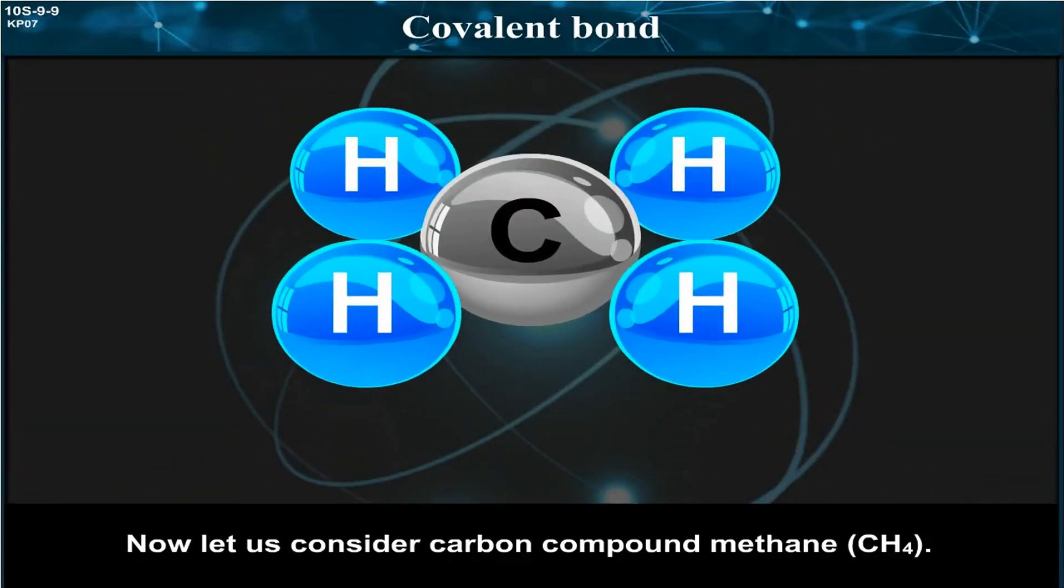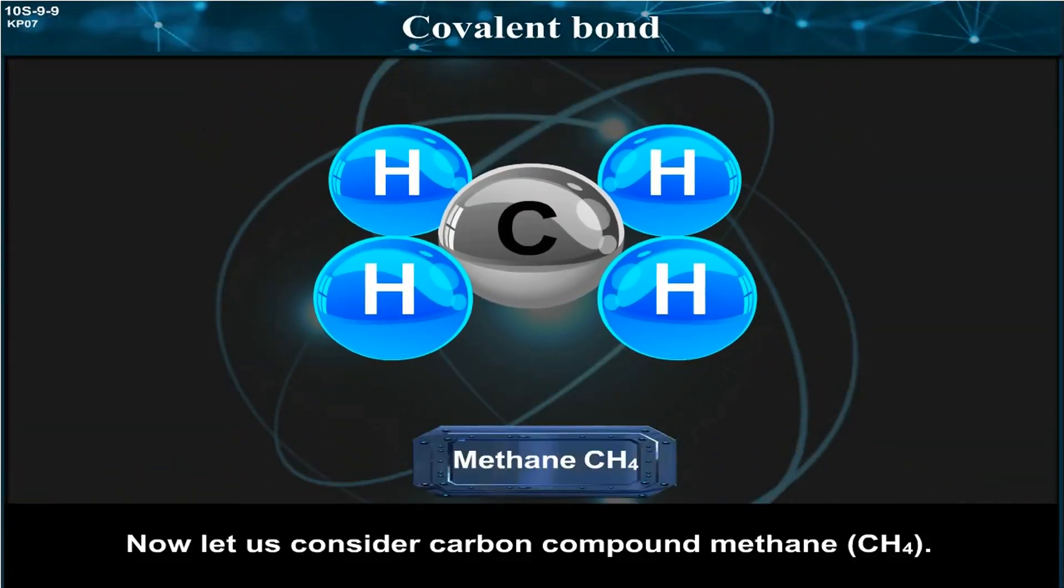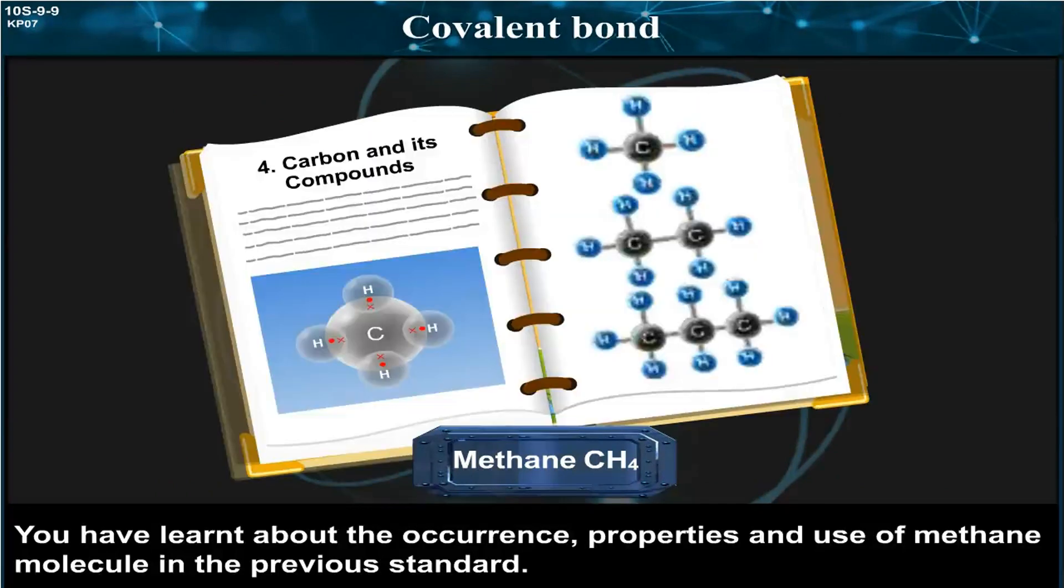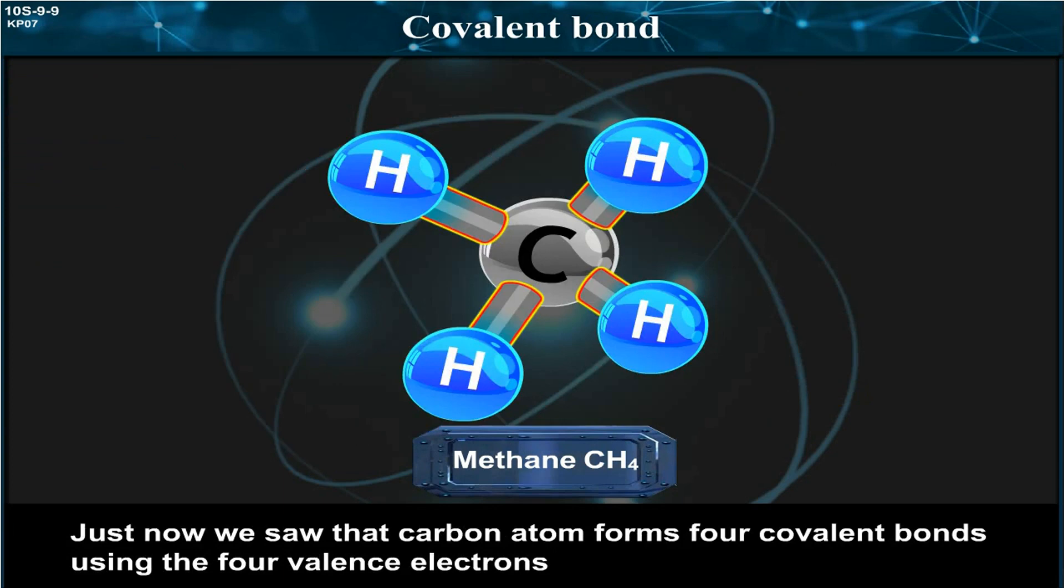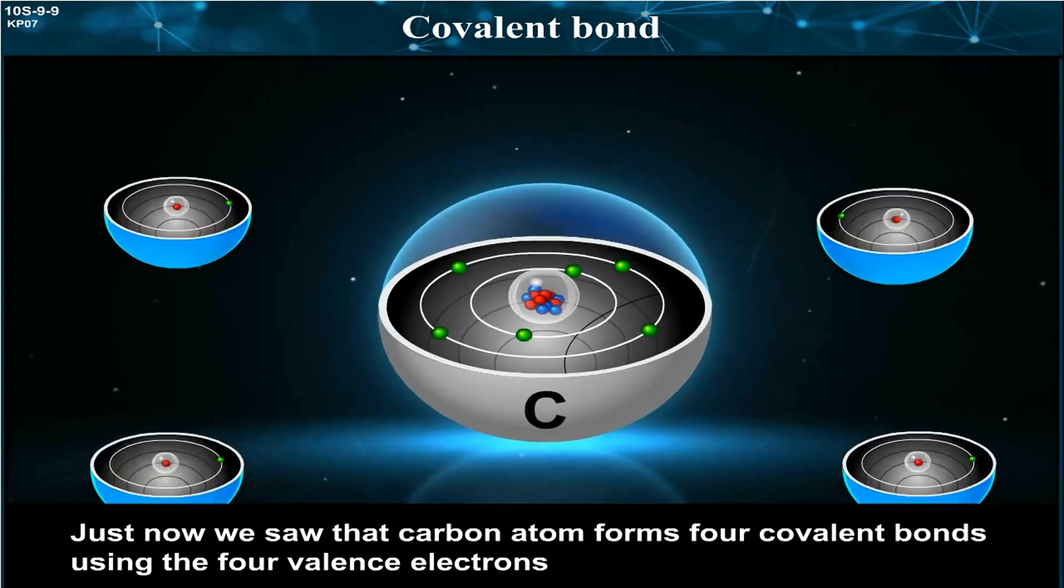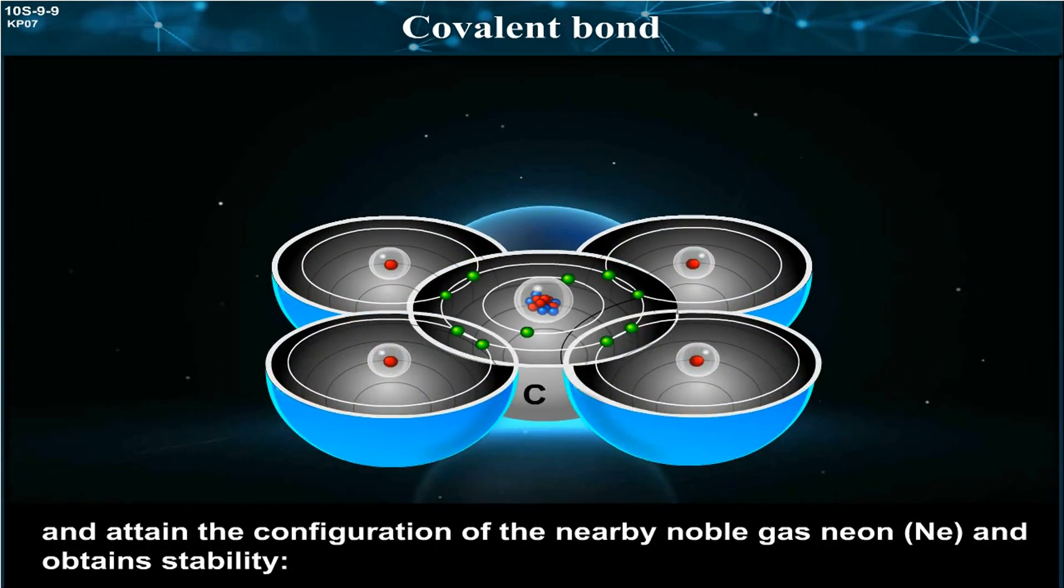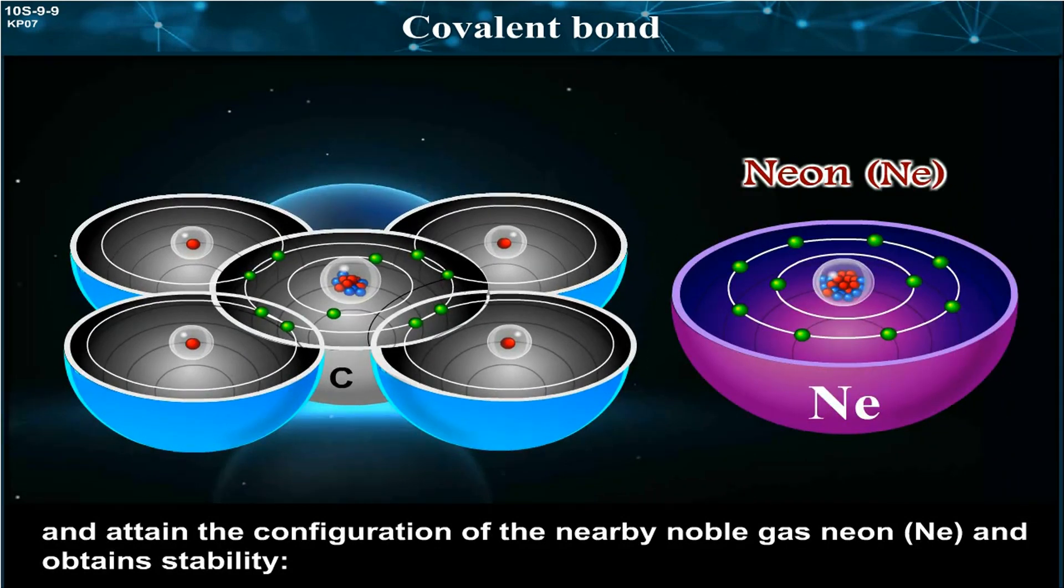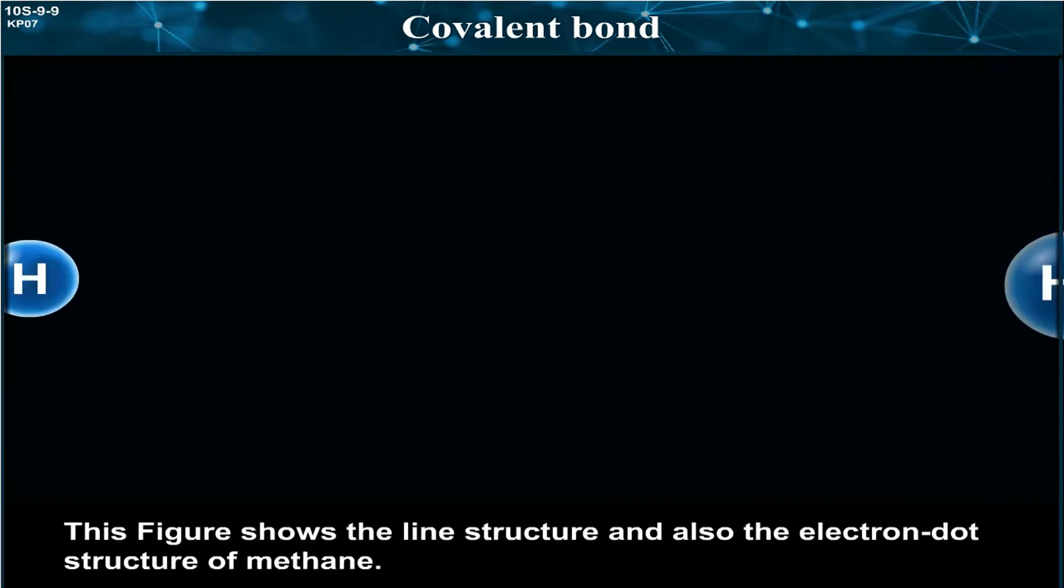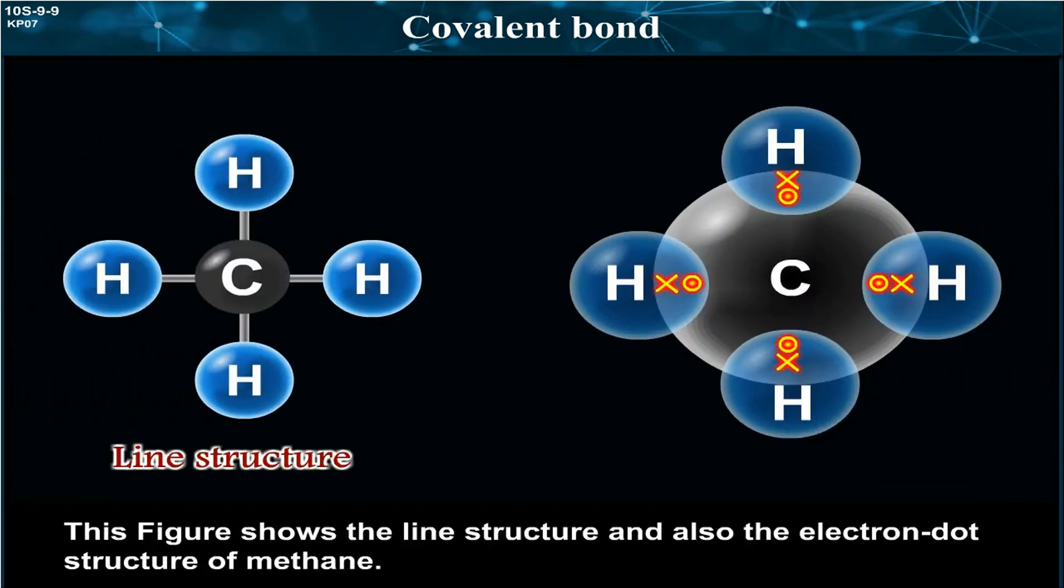Now, let us consider carbon compound methane, CH4. You have learned about the occurrence, properties and use of methane molecule in the previous standard. We saw that carbon atom forms four covalent bonds using the four valence electrons and attains the configuration of the nearby noble gas neon and obtains stability. This figure shows the line structure and also the electron dot structure of methane.